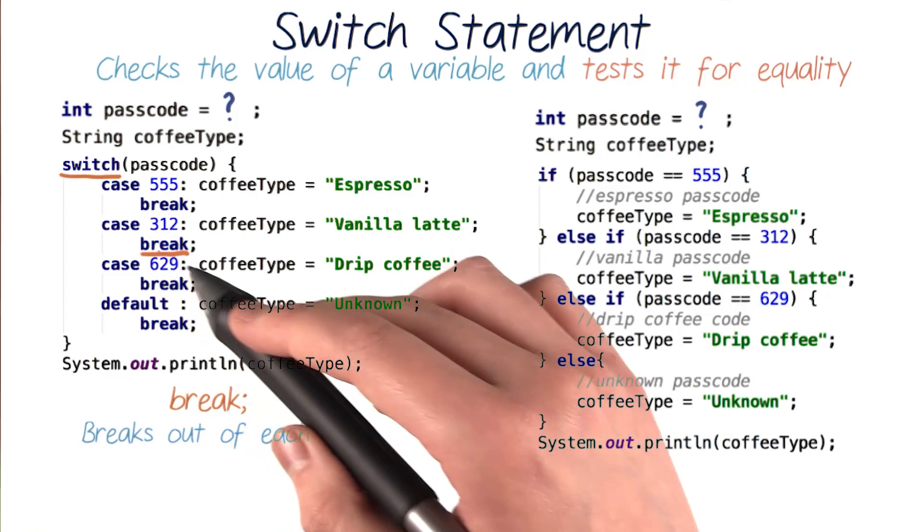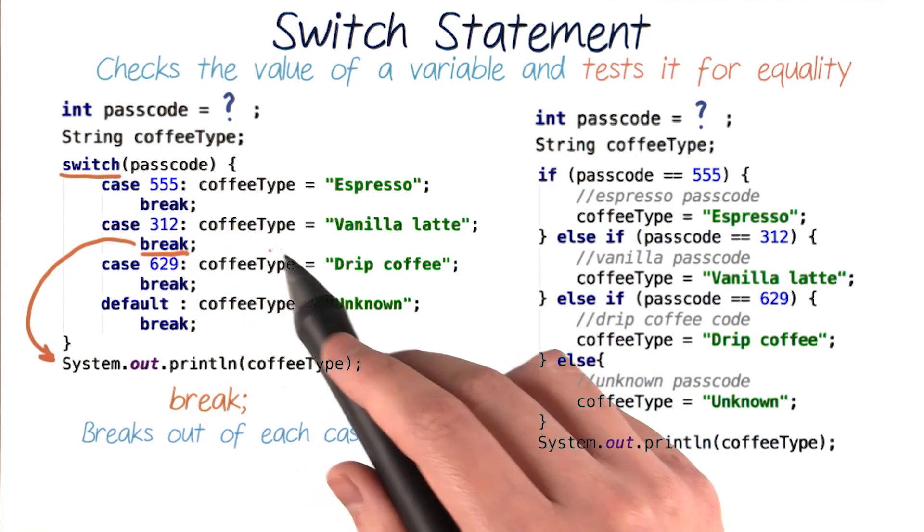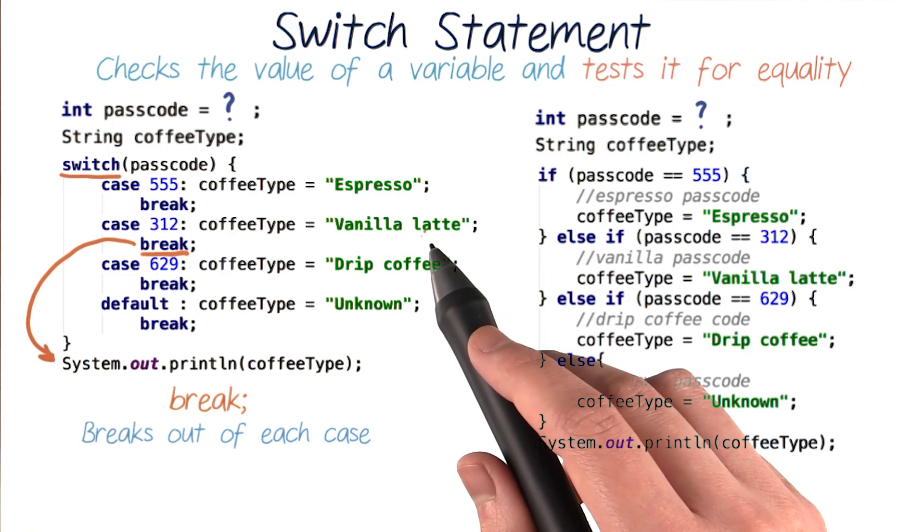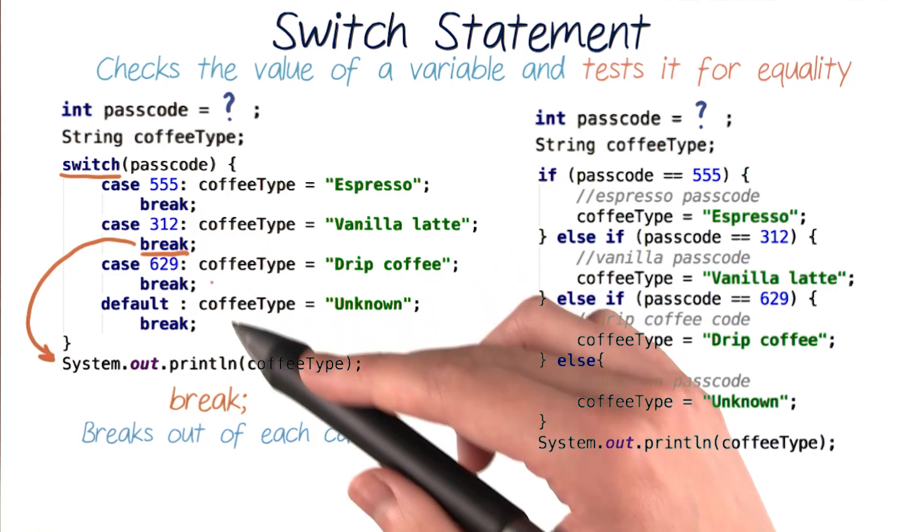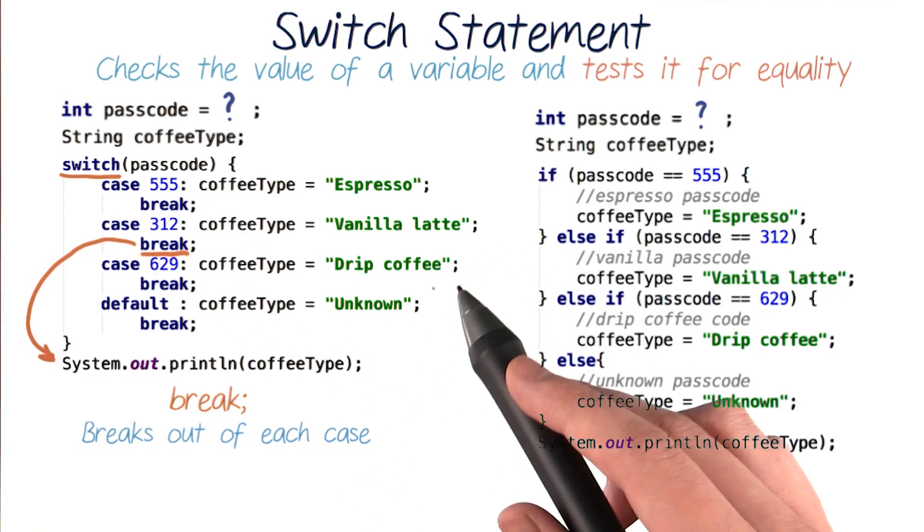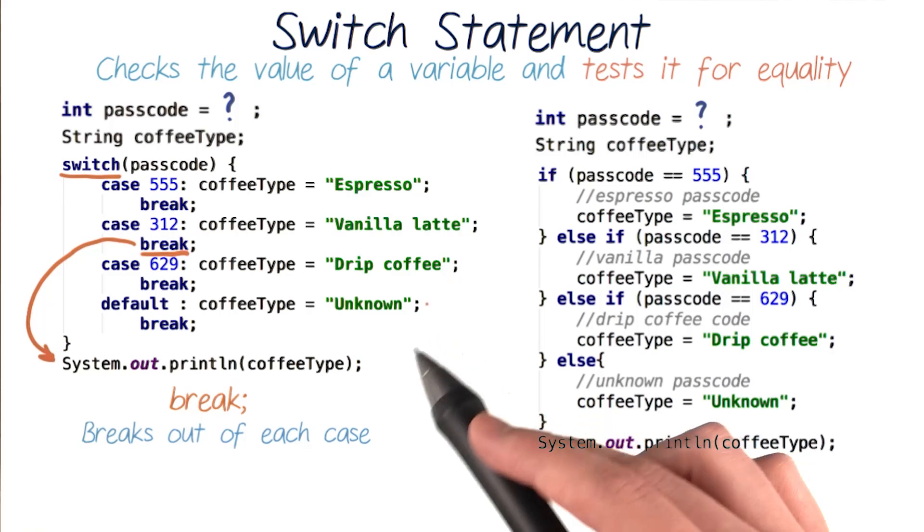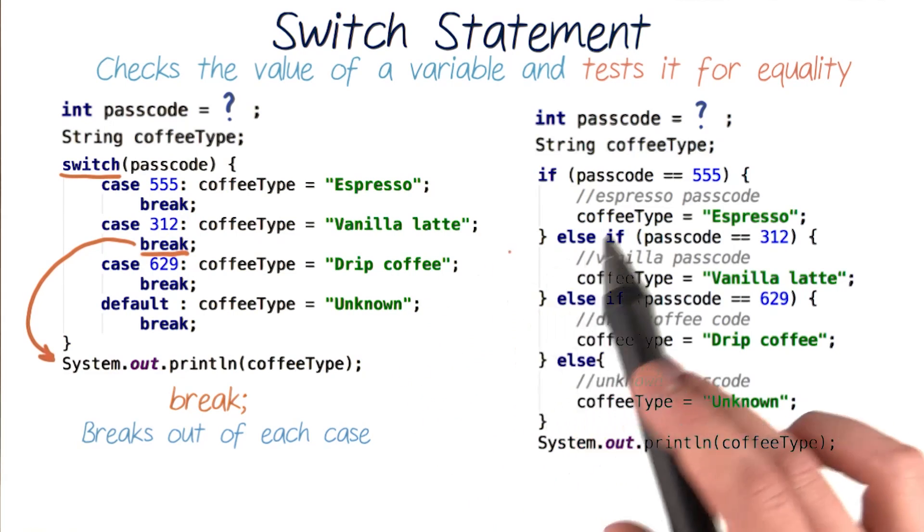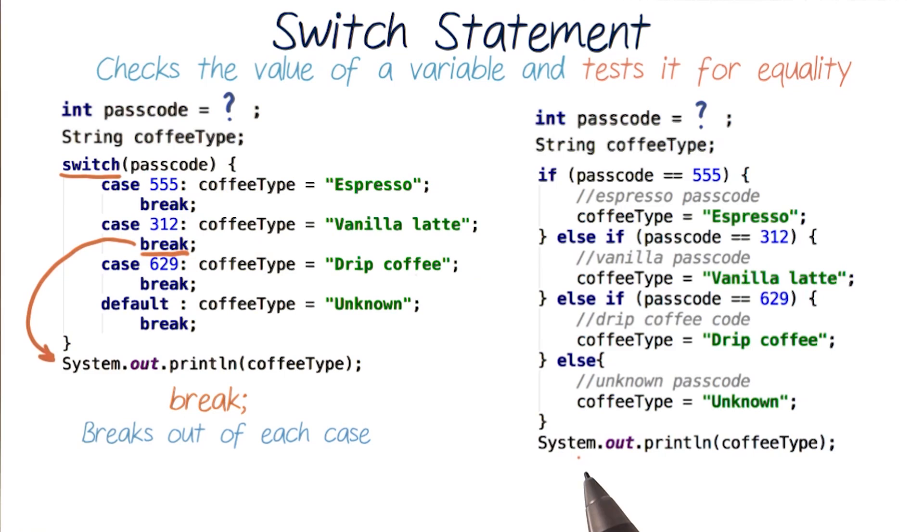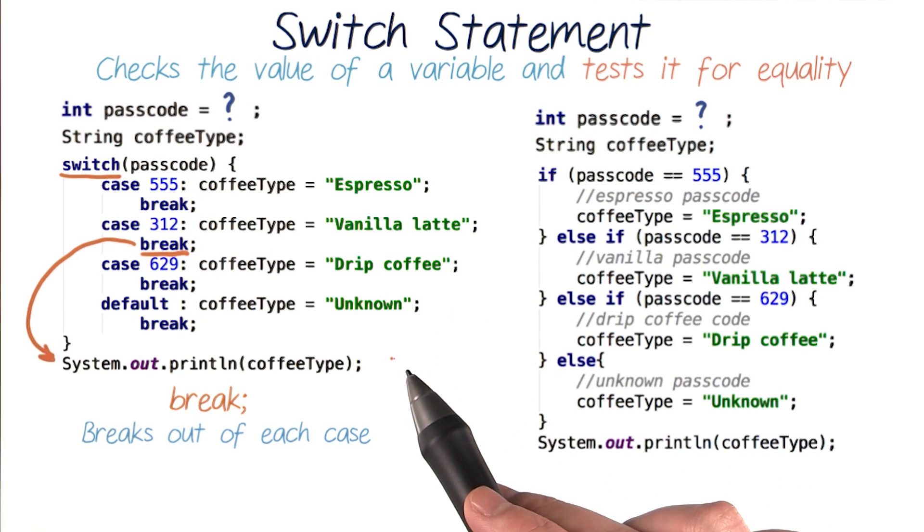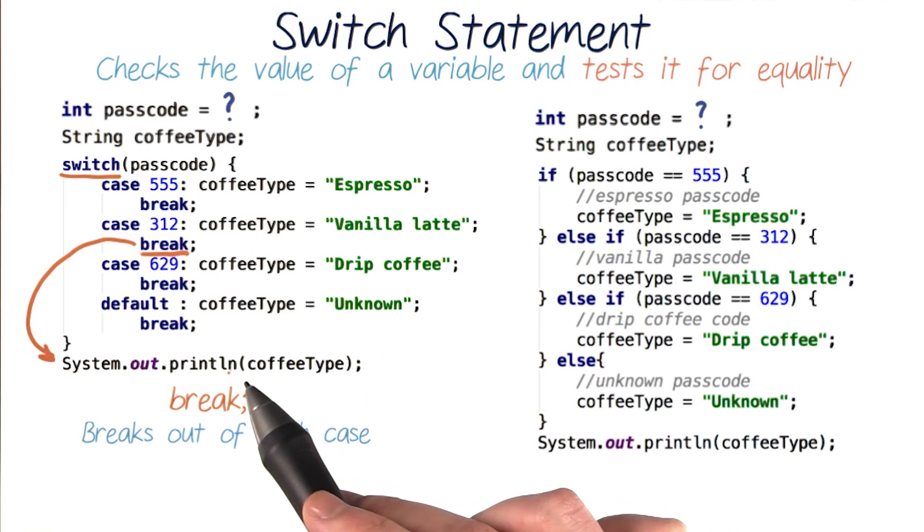After each case is this word break. A break happens after code inside a case executes. It breaks out of the switch statement and goes to its ending curly brace. So having breaks after each case ensures that only one of these blocks of code will execute. This is just like how only one block of code in a series of ifs and else ifs will execute at a time. The break will break out of our decision-making code and go to the end of our ending curly brace, where it will print out the value of coffeeType.